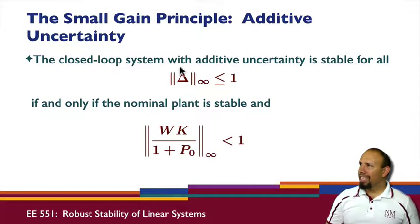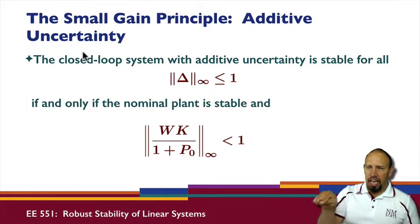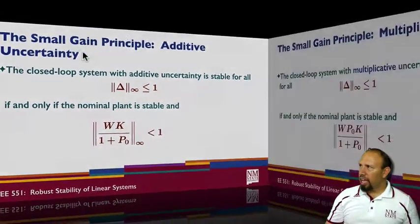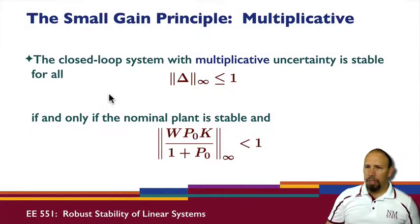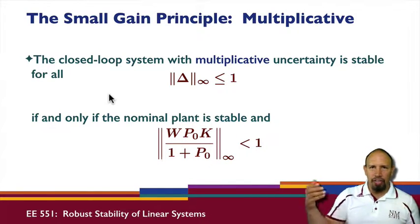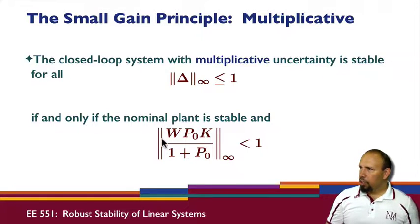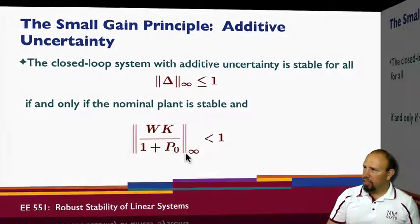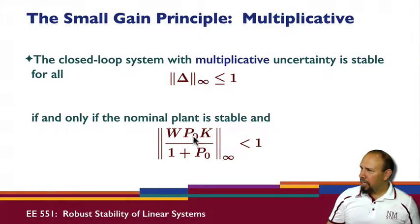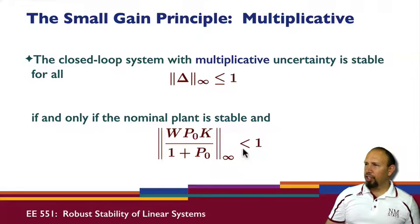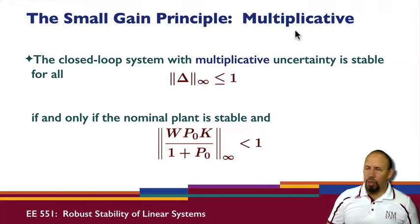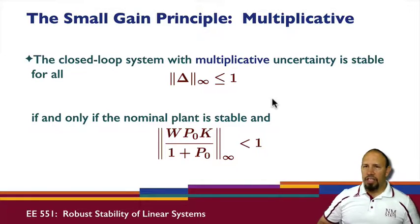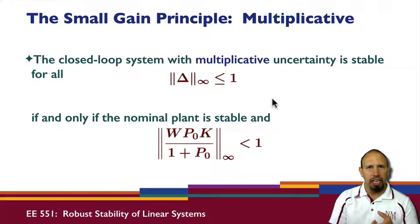We have that result for additive uncertainty — that's when the uncertainty and the plant go in a parallel path. If we look at multiplicative uncertainty, that is when you have the uncertainty and then the plant in cascade or in series. In which case, the function we're looking at the infinity norm of is different: for additive it's W·K over 1 plus P-naught K, whereas for multiplicative it's W·P-naught·K over 1 plus P-naught K — a little bit different function because uncertainty enters at a different place. This gives us the small gain principle for additive and multiplicative uncertainty. Next, we're going to look at the small gain theorem in general.